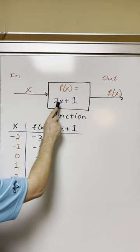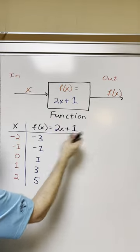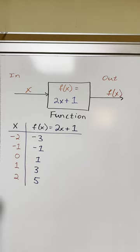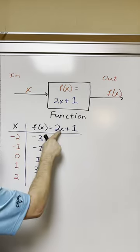If our function, for example, is equal to 2x plus 1, we put input values here and we can make a table of the corresponding output values. For instance, if I put 0 here,